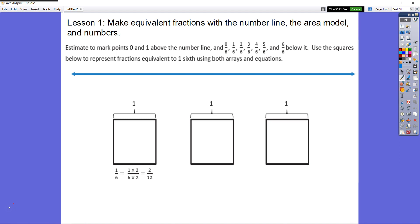First thing we're going to do is estimate to mark the points 0 and 1 above the number line and 0/6, 1/6, 2/6, 3/6, 4/6, 5/6, and 6/6 below it. And then after we do that, we're going to use the squares, so these three squares here, to represent fractions equivalent to 1/6 using both arrays and equations. Let's go ahead and get started.